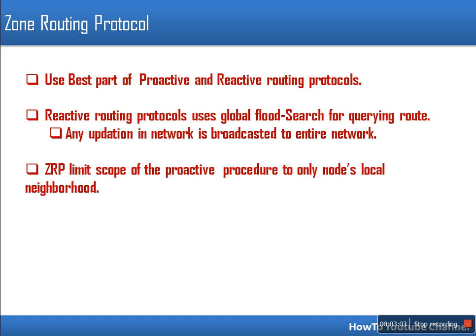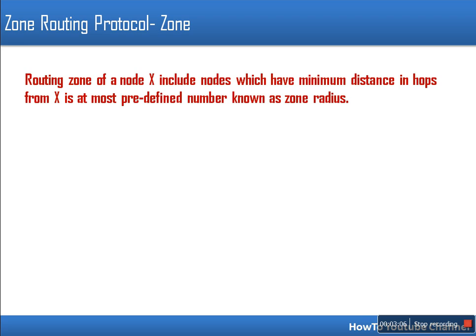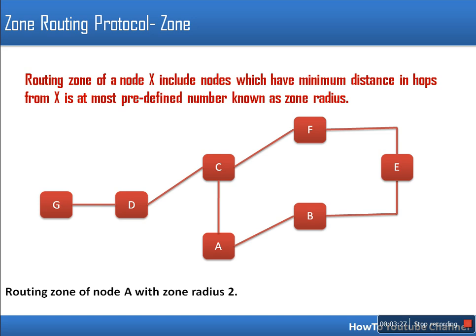In Zone Routing Protocol, the network is divided into zones. The zone criteria is defined using a metric known as zone radius. This zone radius specifies the distance which determines which nodes can be inside a zone. Every node has its own zone and that node is considered the center of the zone.